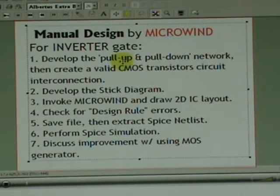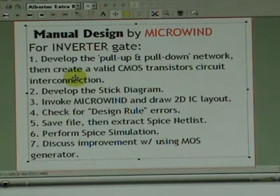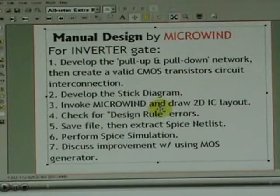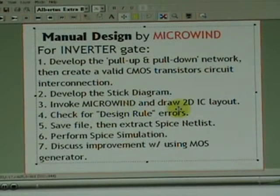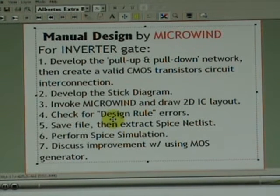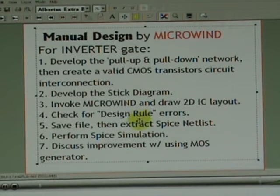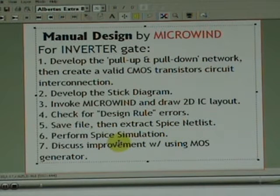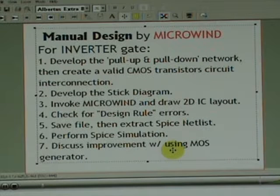We will develop the pull-up pull-down network and create a valid CMOS transistor circuit interconnection. Then develop the stick diagram, invoke Microwind, and draw the 2D IC layout. We will check for design rule errors, extract the SPICE netlist, perform SPICE simulation, and discuss improvement using the MOS generator.